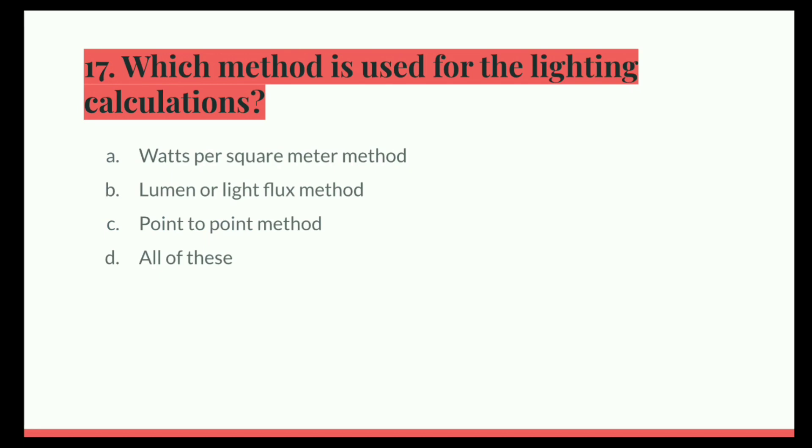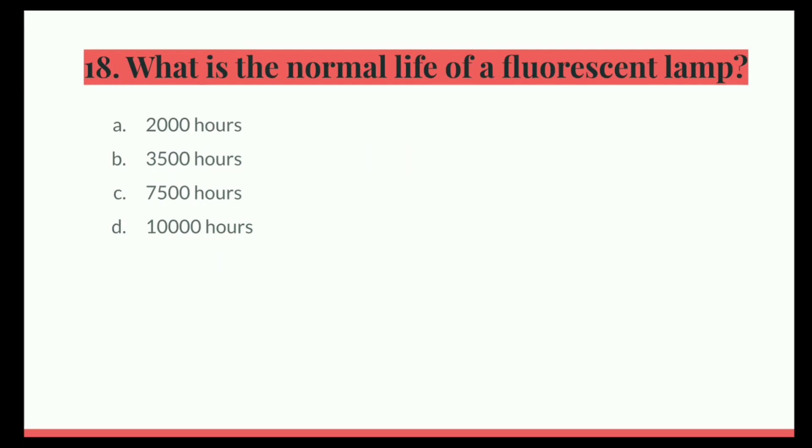Next question. Which method is used for the lighting calculations? Option A, watt per square meter method. B, lumen or light flux method. C, point to point method. D, all of these. And the correct answer is all of these.